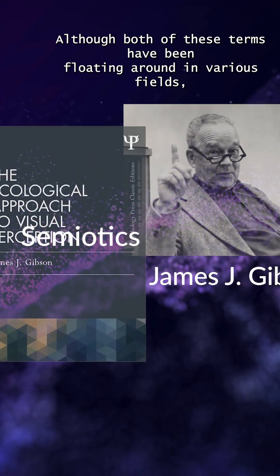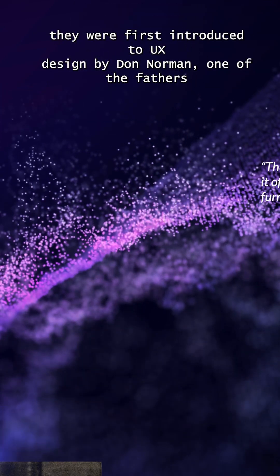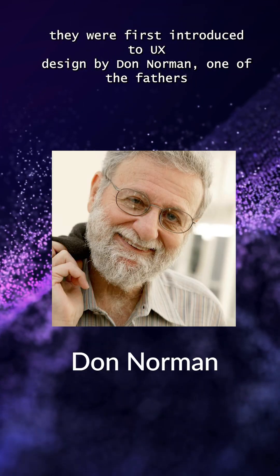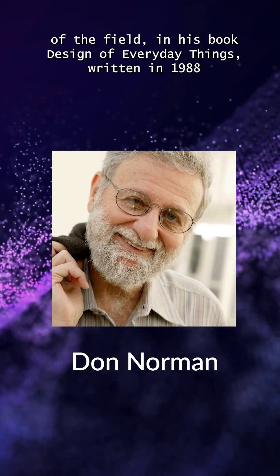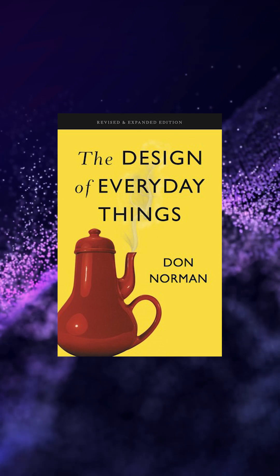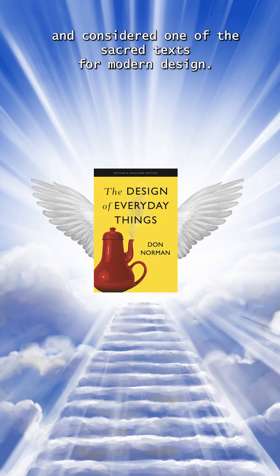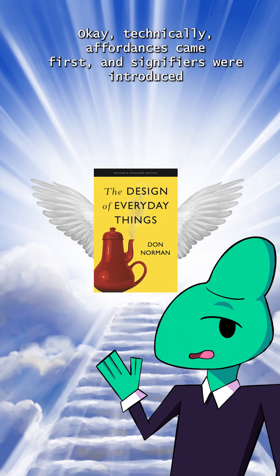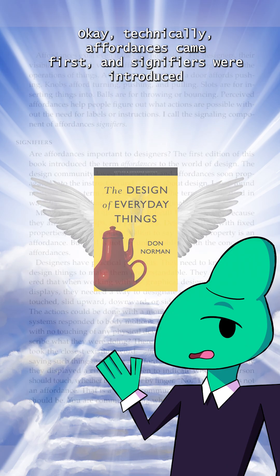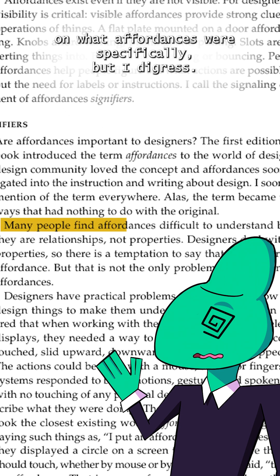Although both of these terms have been floating around in various fields, they were first introduced to UX design by Don Norman, one of the fathers of the field, in his book Design of Everyday Things, written in 1988 and considered one of the sacred texts for modern design. Technically, affordances came first, and signifiers were introduced in the 2013 edition of the book because too many people were getting confused on what affordances were specifically.